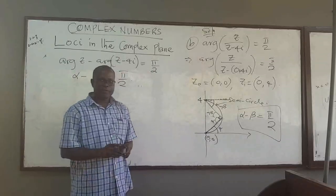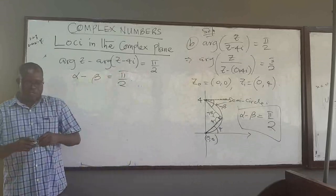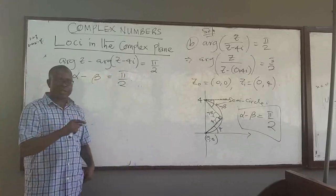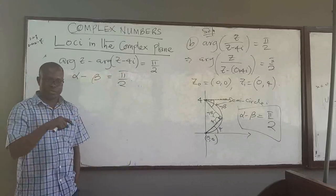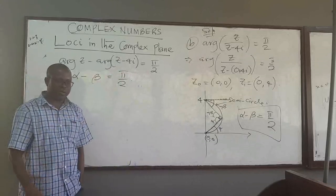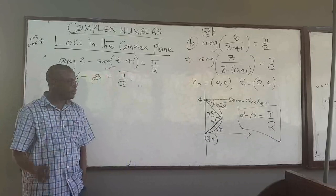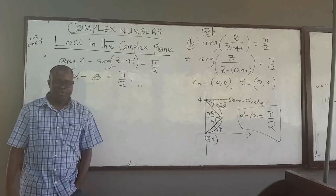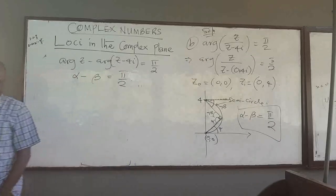That is how you prove or show that the locus is a semicircle or an arc of a circle, based on the given equation. There is an interesting example in your other notes which you can look at. Let me know if you have any problems. See you later.